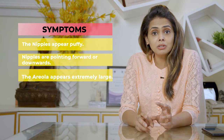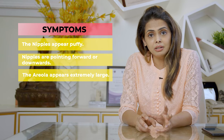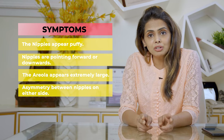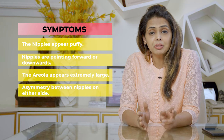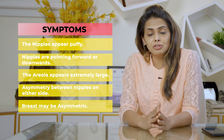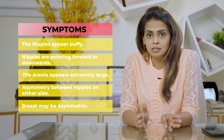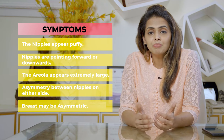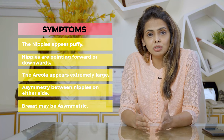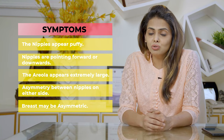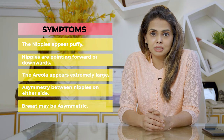When you look at it from the front or the side view, in very severe cases you will see that the nipple appears puffy, pointing forwards and downwards. The areola appears extremely large, and sometimes there will be an asymmetry between the nipples on either side, and sometimes the breast will be asymmetric on both sides. If any of these symptoms you notice after your pubertal growth, then you may suspect that you could be having a tubular breast deformity.